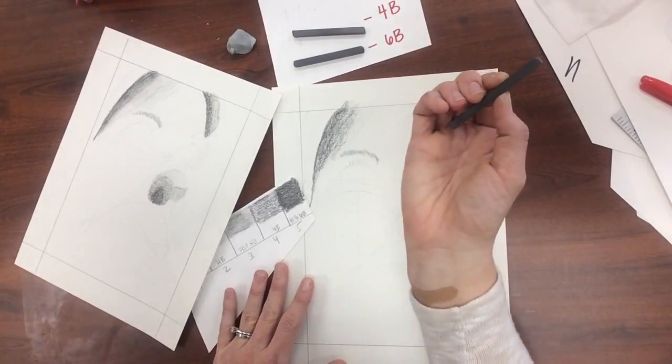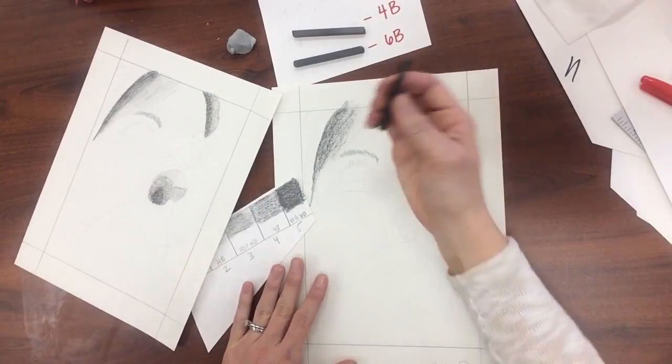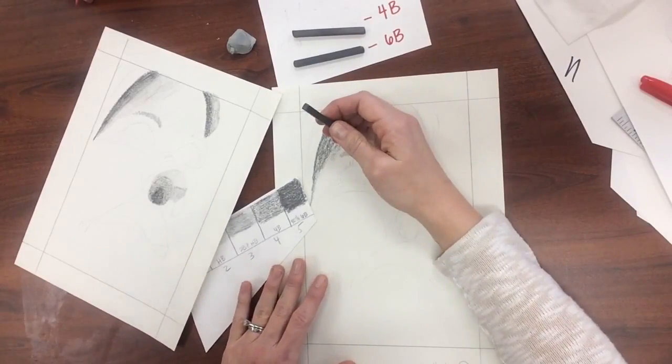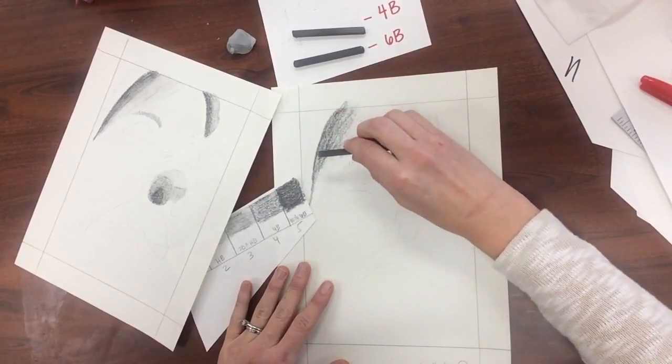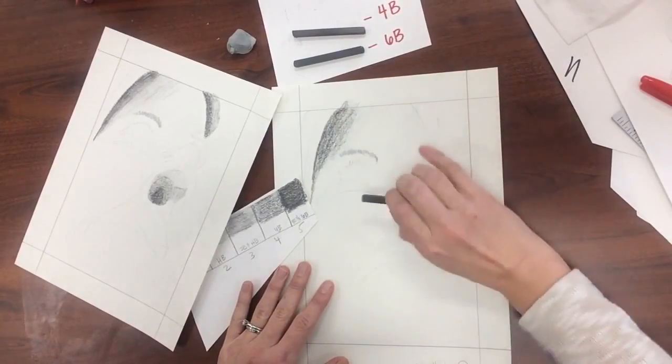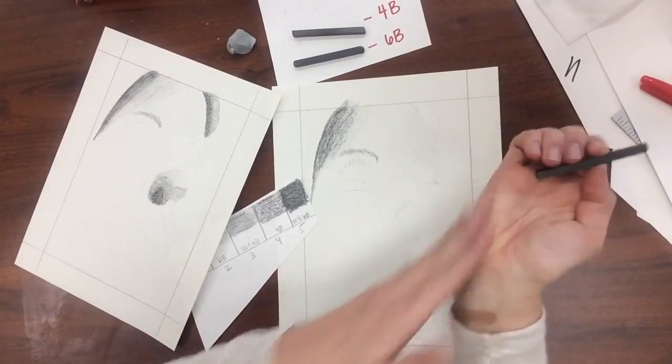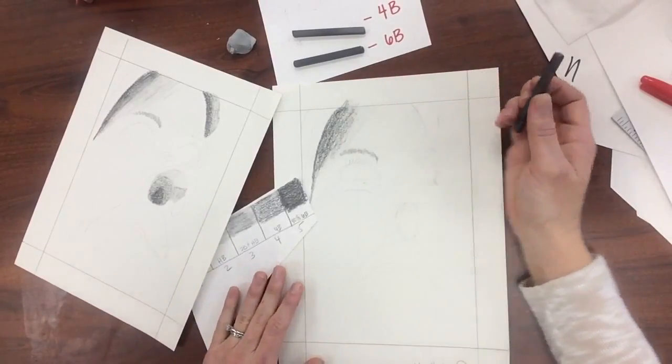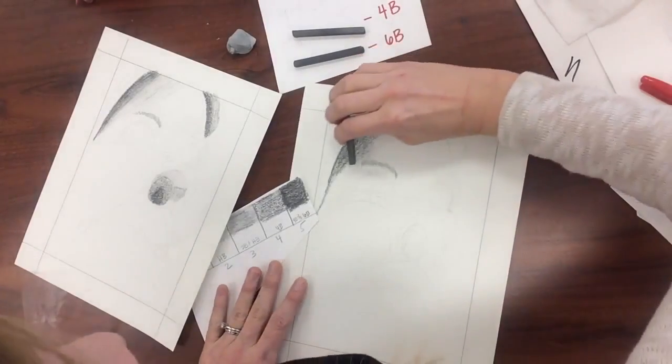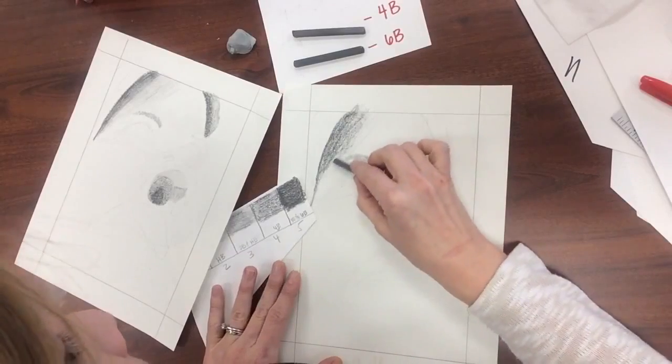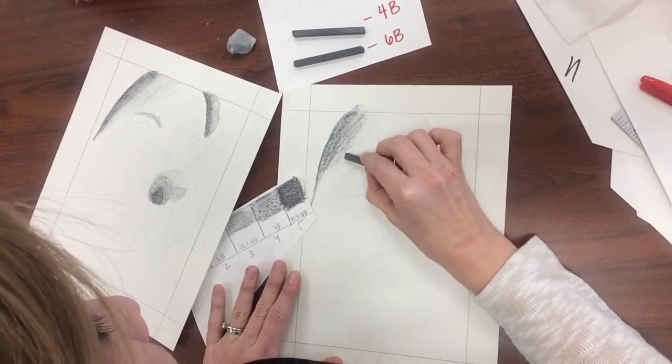Notice when I'm using my graphite stick, I'm not laying my hand on the paper because obviously that will smear. I'm holding my hand up and I'm either balancing with my pinky or kind of right here on the edge, making sure that none of my hand touches any of the graphite ever. And if I have to move my hand around the corner, then I will. Oops, I was doing my eyebrow.